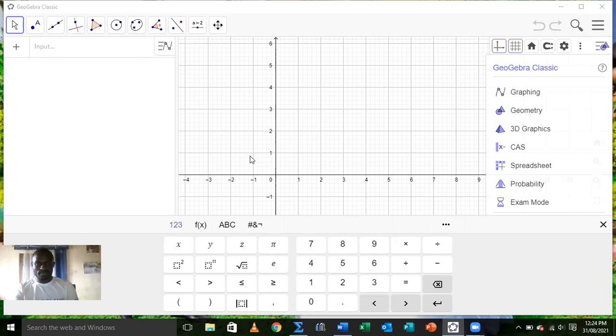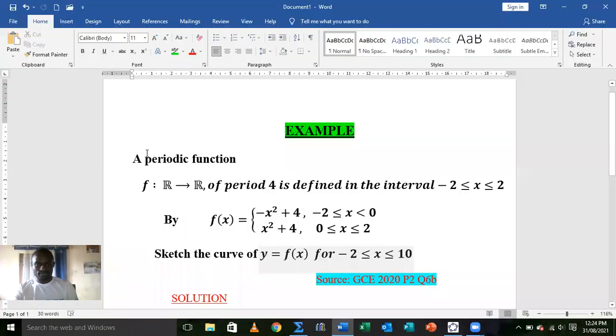To follow the lesson, we are going to be using an example. The example says that a periodic function f maps from R to R of period 4 is defined in the interval -2 ≤ x ≤ 2 by f(x) equals the piecewise defined function: -x² + 4 in the interval -2 ≤ x < 0 and x² + 4 in the interval 0 ≤ x < 2.